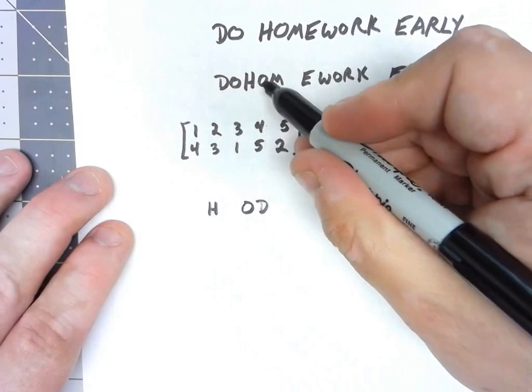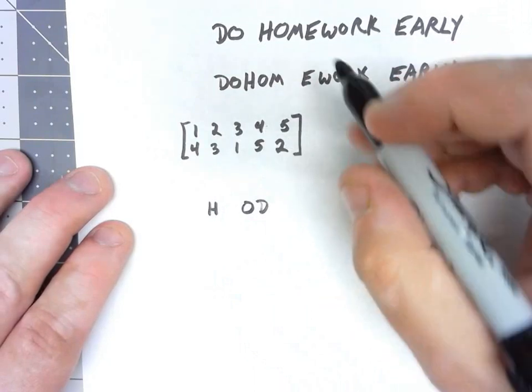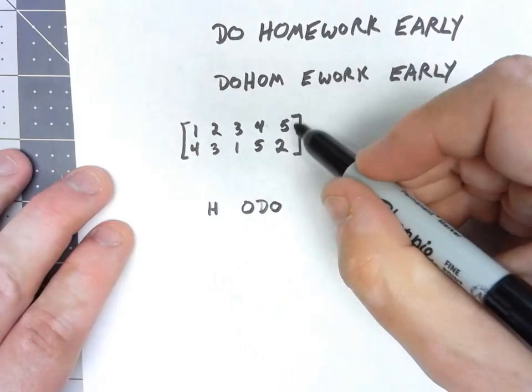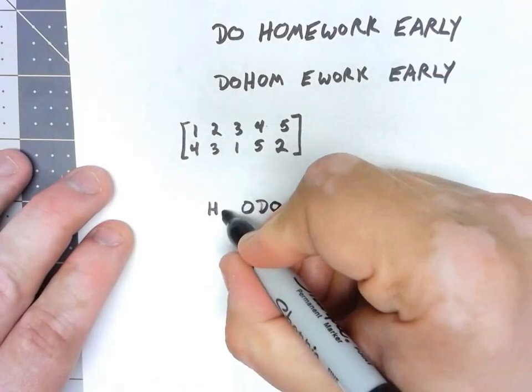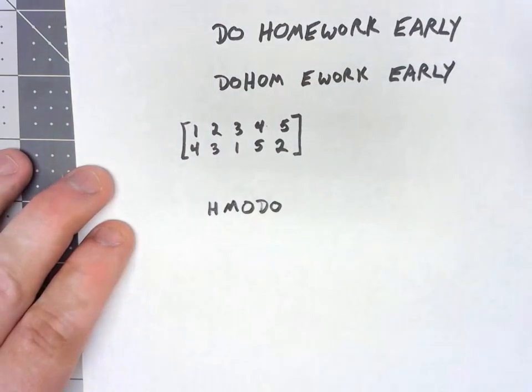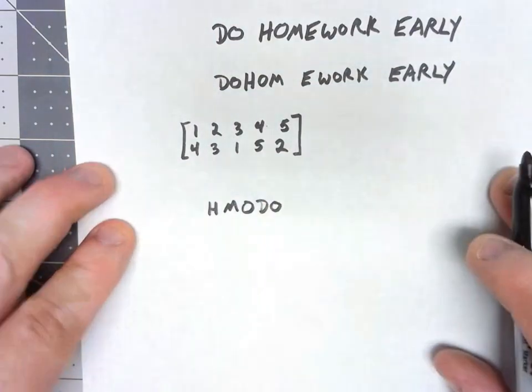Four, the fourth letter, O, is going to go to the fifth position. And the fifth letter, M, is going to go to the second position. Do that to the second block.